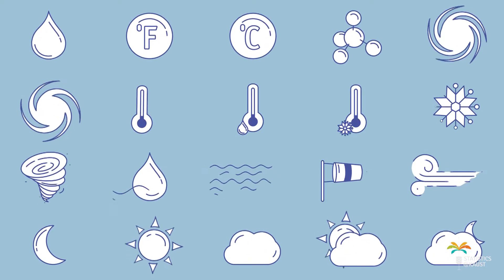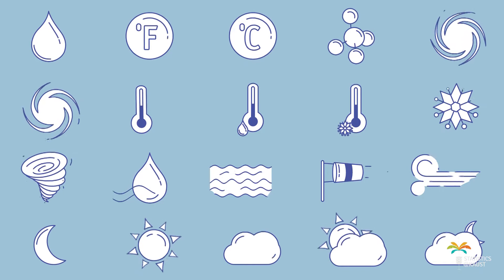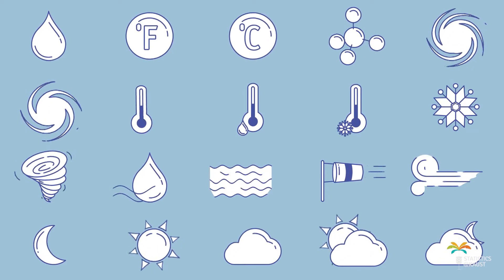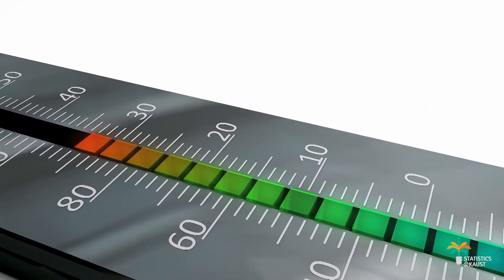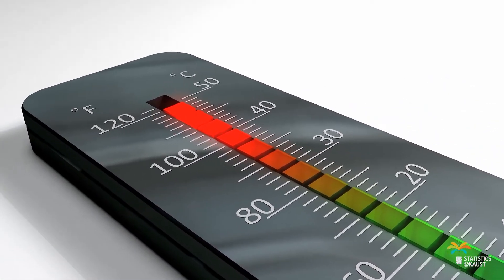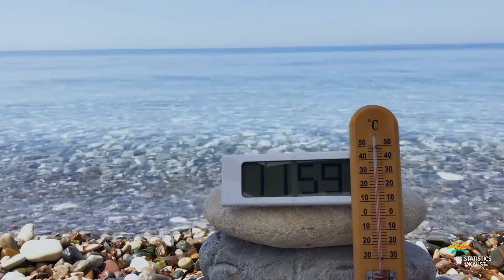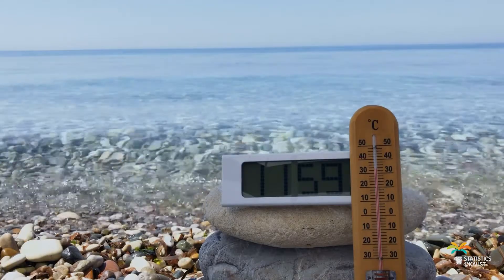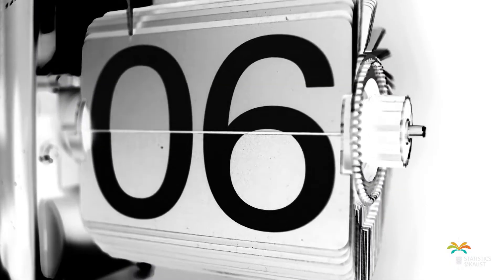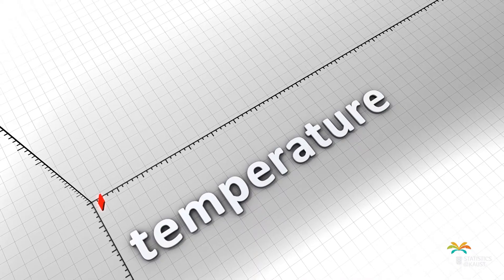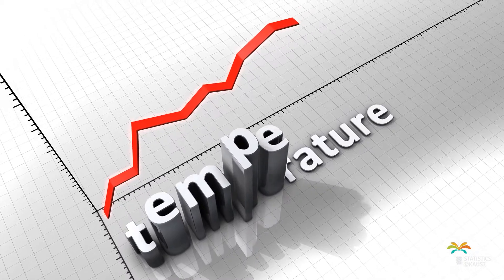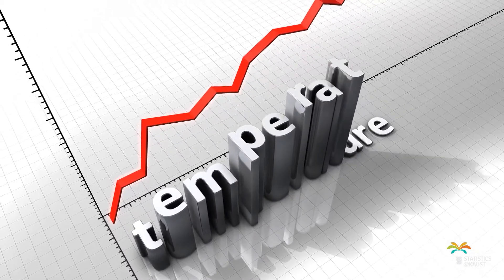My research is mainly about multivariate functional data. Normally data is just about some point — for example, the temperature today like 35 degrees. But the functional data we are analyzing is not only the data today; we will see what the temperature is for every hour today. So it's the temperature from zero hour to 24 hours of the day — it's not only a point, it will be a curve over time.